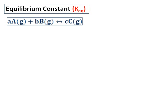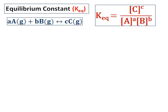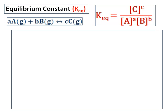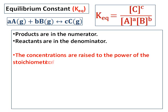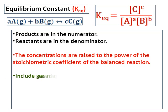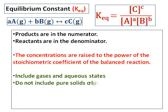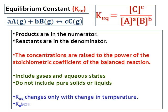Now we will learn some of the rules in writing the equilibrium constant. Consider the example where the reaction is aA plus bB giving you cC. The equilibrium constant for this reaction is the concentration of C raised to the power c, divided by the concentration of A raised to the power a, times the concentration of B raised to the power b. Products are always in the numerator, reactants are in the denominator, and concentrations are always raised to the power of the stoichiometric coefficient of the balanced reaction. So before you start writing an equilibrium constant, balance the equation.